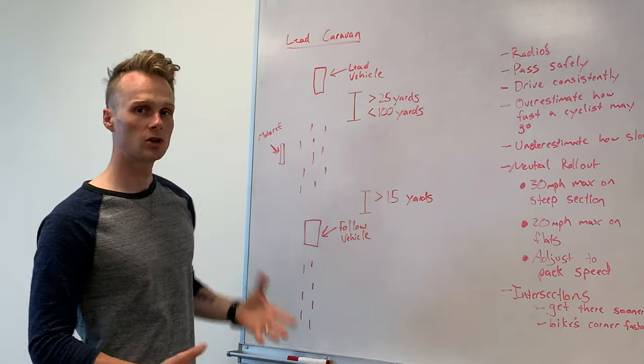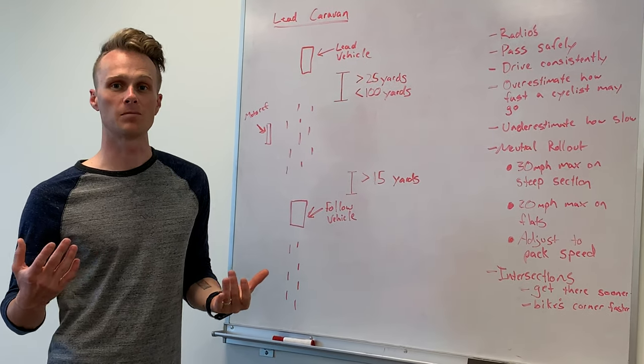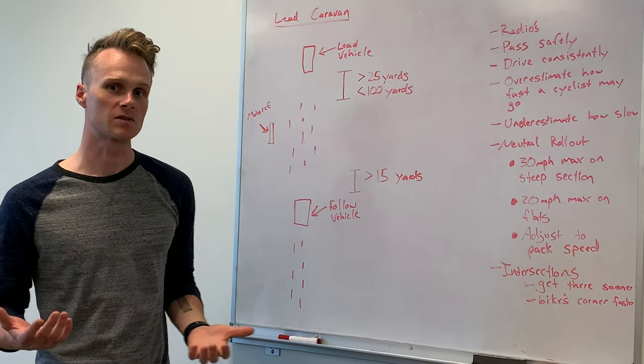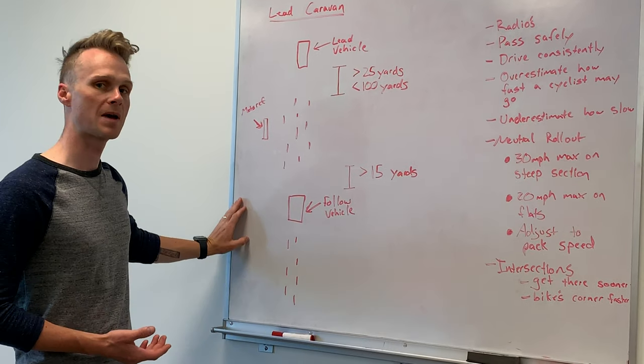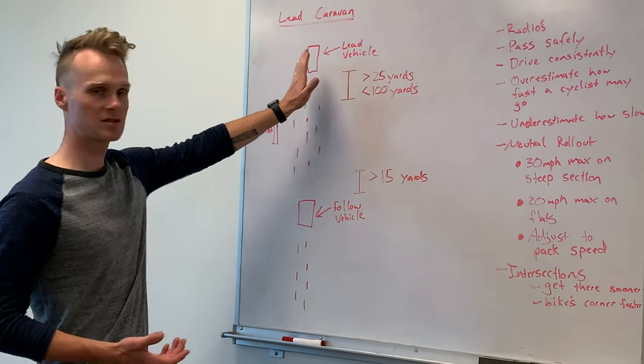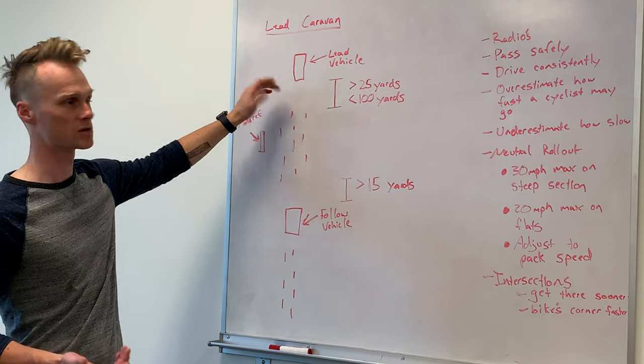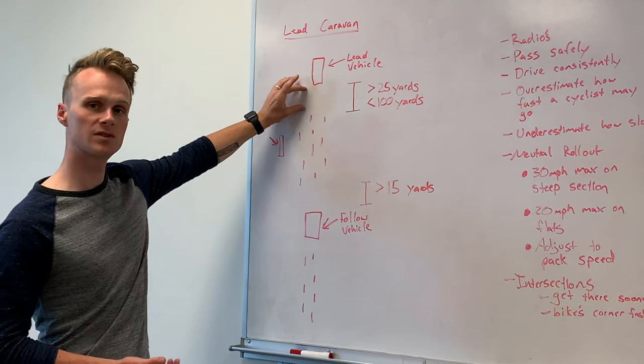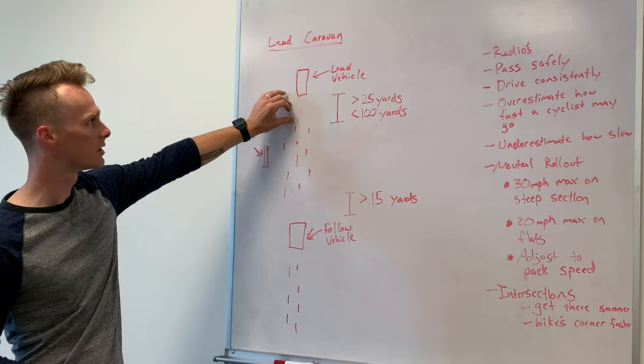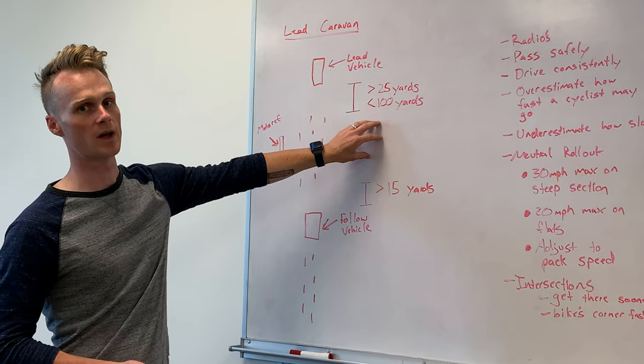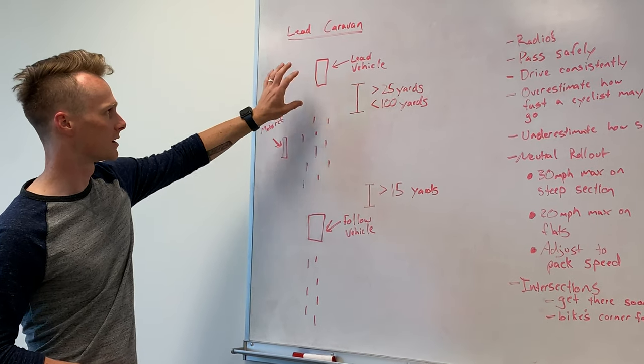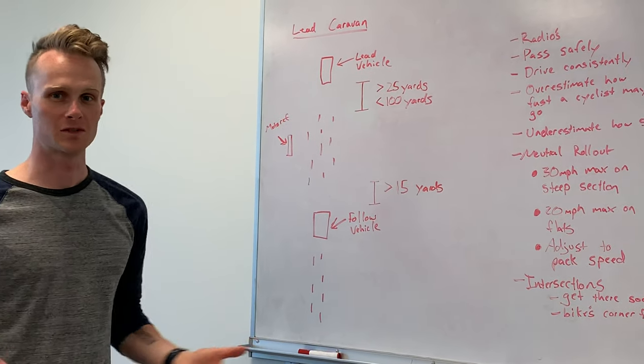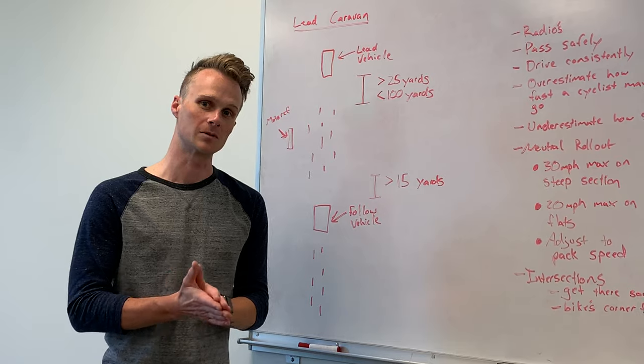If it becomes too close, then riders are going to be forced to slow down. If it becomes too far, then there's not as much of an effect and there's always a chance that a motorist that's trying to pass will kind of sneak in there in a bad way, in a dangerous way. So really you want to be at least 25 yards, greater than 25 yards in front of the field and less than 100 yards away. If you get too close, riders are going to start yelling at you. If you get too far, you're not fulfilling the purpose of lead vehicle.